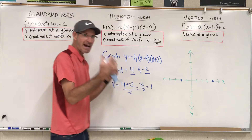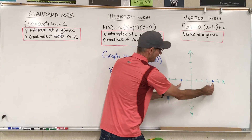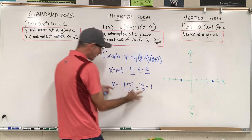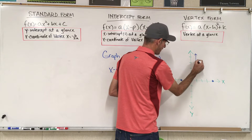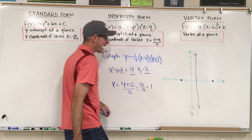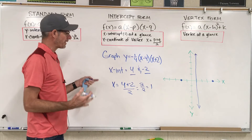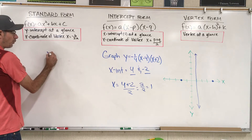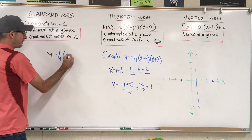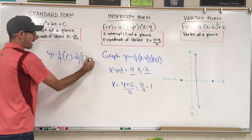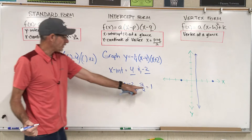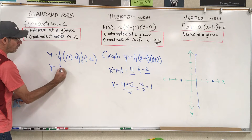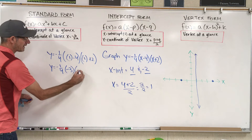The exact middle where my axis of symmetry is going to be is at x equals 1. That is the exact middle, just like our calculation showed us. So my axis of symmetry is going to look like this. Now I just need to find the y-coordinate of the vertex. So in order to find the y-coordinate, I'm going to go y equals negative one-fourth times (x minus 4) times (x plus 2), and I'm going to put my x value of 1, the x-coordinate of my vertex, in there.